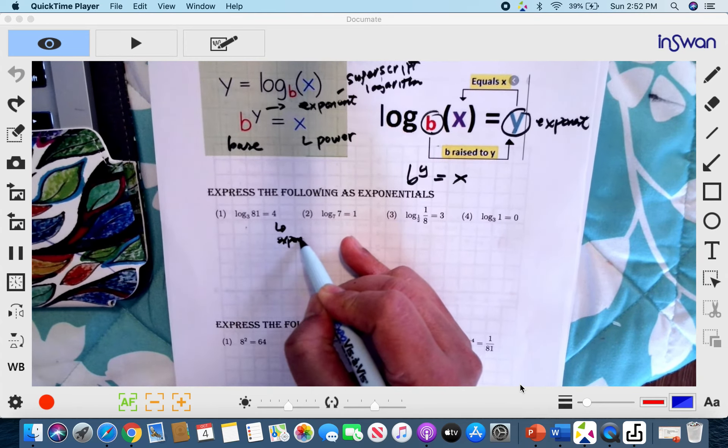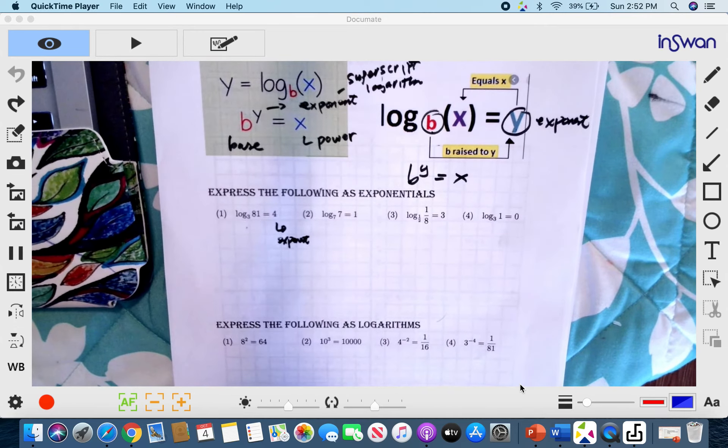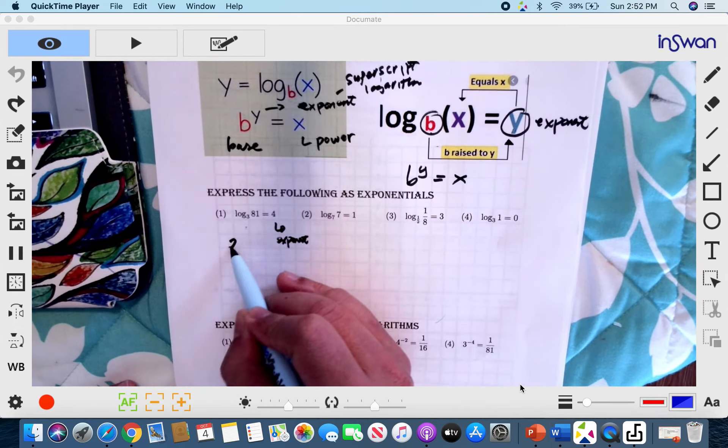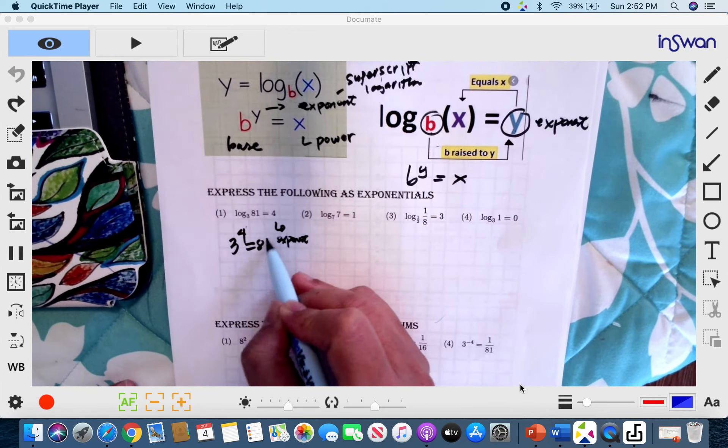So that you will not get lost. Remember, the answer is the exponent. So therefore, this is 3 raised to 4 equals 81.